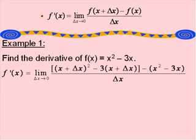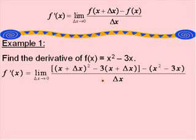So in our numerator, we have f of x plus delta x, which is found by replacing each x with the quantity x plus delta x: x plus delta x quantity squared minus 3 times x plus delta x. Then we are subtracting f of x, which is x squared minus 3x, and this has all been divided by delta x.